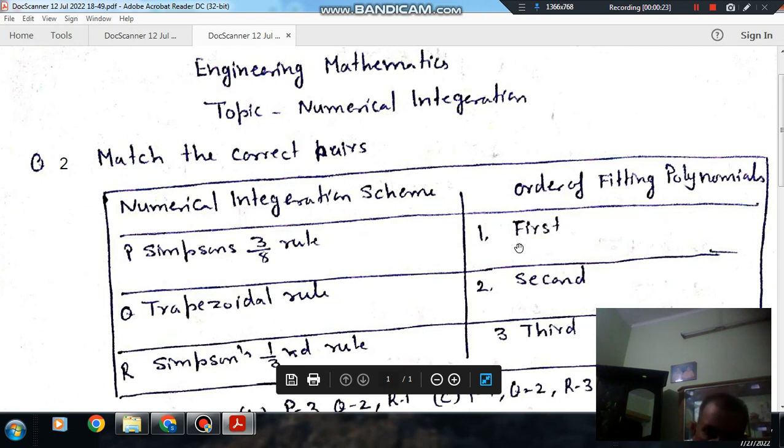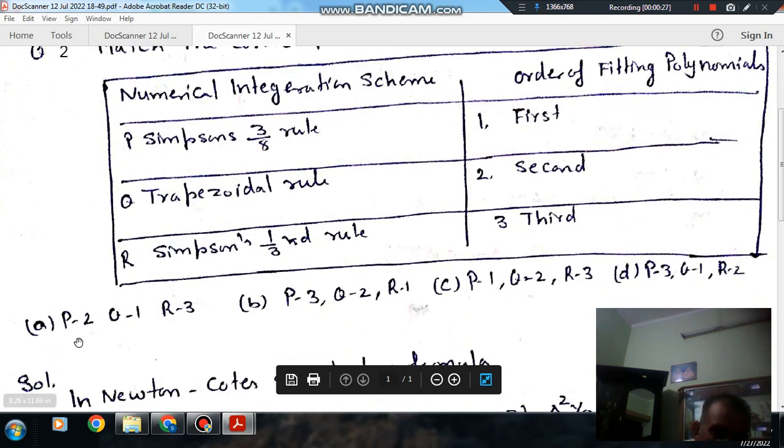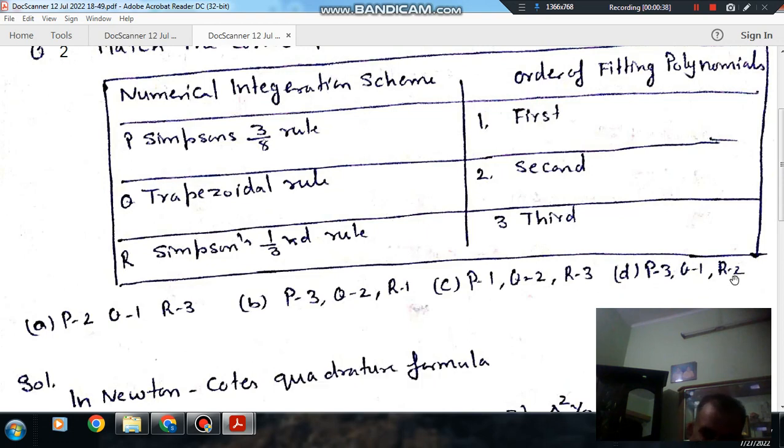Order of fitting polynomial: 1 first, 2 second, 3 third. Options are (A) P2, Q1, R3. Option B: P3, Q2, R1. Option C: P1, Q2, R3. And option D: P3, Q1, R3.